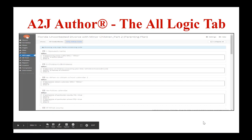The next tab is the All Logic tab. This lets you see and edit all the logic you've added to your interview. If you have any errors with your logic, the logic box will be red with an error message and a warning symbol. Like the Map tab, this gives you the bird's-eye view of your interview — you can see all the logic in one place and make any changes necessary. You can also edit your logic boxes within the question design editor, which we'll talk more about later and in video 3.